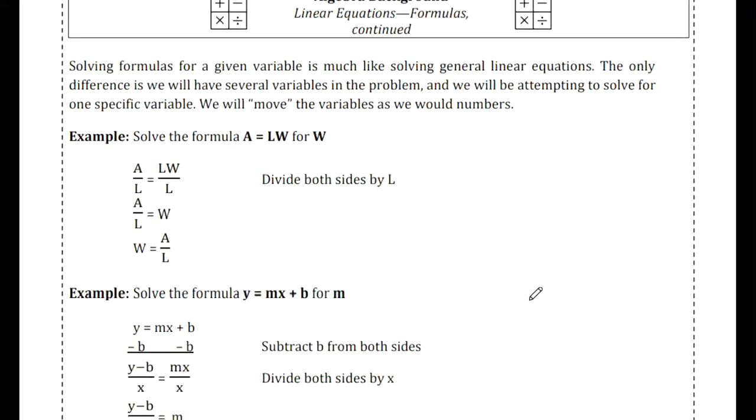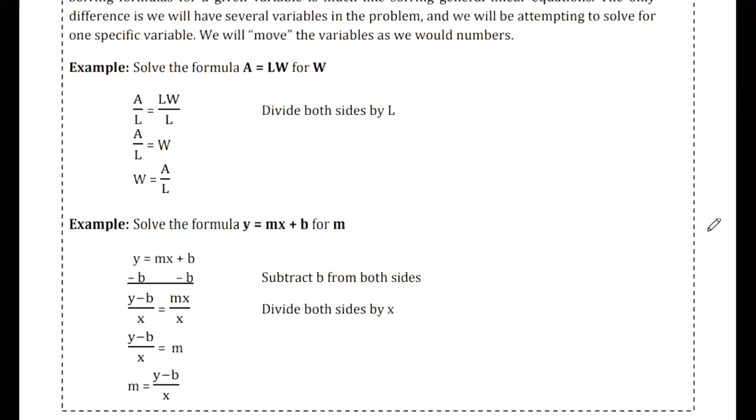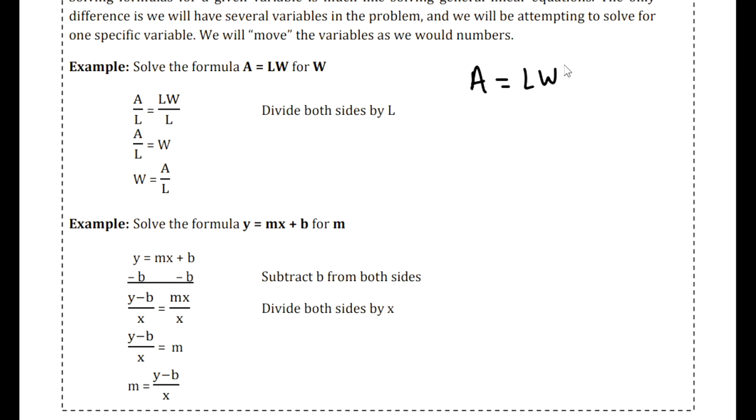Sometimes we'll have a formula, but it's not solved for the variable that we are interested in. For example, we know that area equals length times width when we're working with a rectangle. But let's say we know the area and we know the length, but we don't know the width. So what we can do is take our formula and solve it for a different variable. If we want to solve this for w, that means we want to get w by itself on one side.